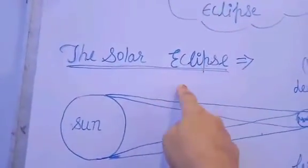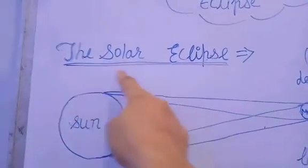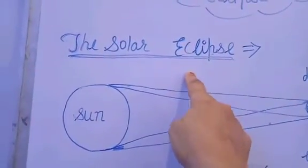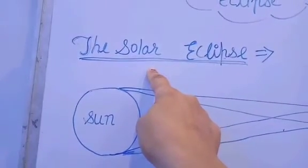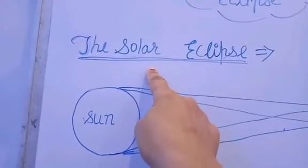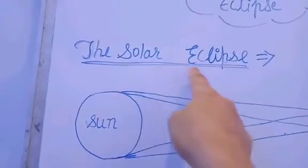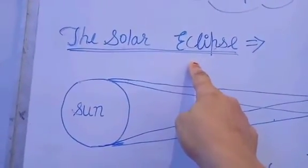Solar eclipse. Surya grahan suna hai sabne? So solar eclipse is the surya grahan. Solar means surya. Suraj se aane wali roshni hoti hai, that is solar. Hum solar energy use karte hai na, sun se aane wali energy, that is the solar energy. So the solar eclipse matlab surya grahan.